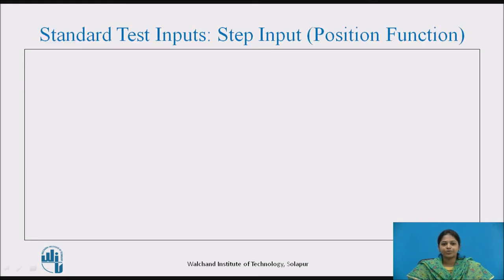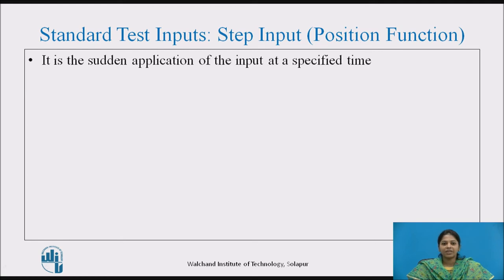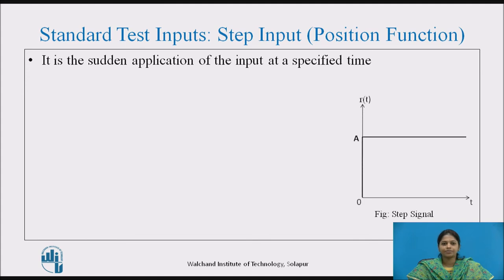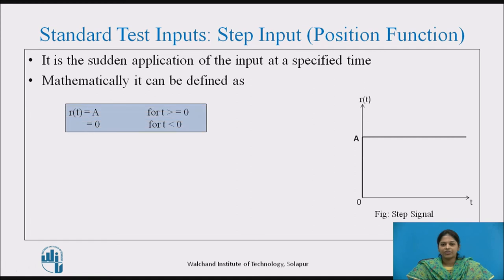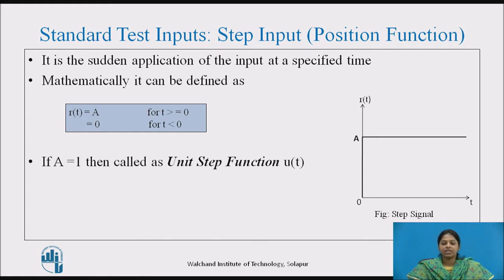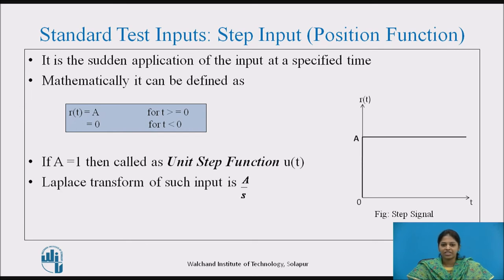The first standard test input is the step input, which is a position function. It is the sudden application of input at a specified time, as shown in the figure. Mathematically, it is defined as R(t) = A for t ≥ 0, and R(t) = 0 for t < 0. If A = 1, it is called the unit step function, denoted as u(t). The Laplace transform of this input is A/s.